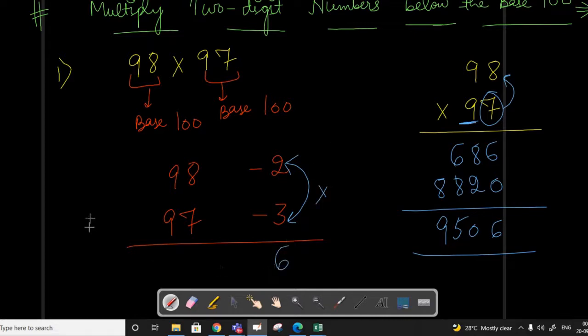But we will not write only 6 here. As we have base 100 and we have two zeros here, we will write 6 as a two-digit number. To make 6 a two-digit number, we just put 0 at tens place: 06.